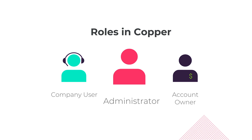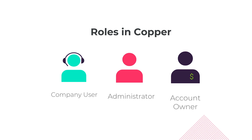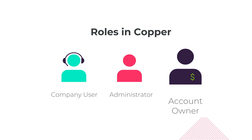The administrator is a super user who can do what a company user can do, but the admin can also customize the account. The account owner is the master user. The difference between the account owner and an admin is the account owner can manage account billing, including choosing how many total users can be added to Copper.